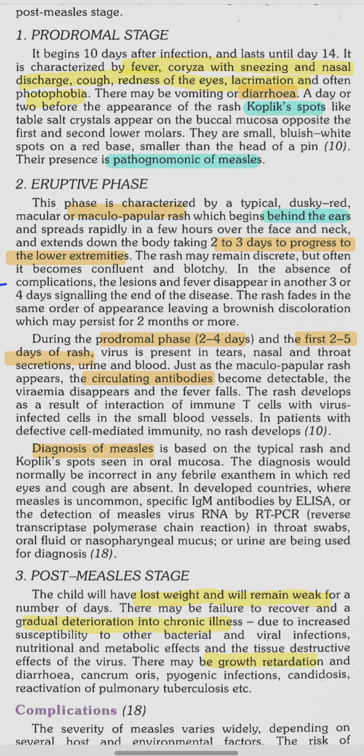In the prodromal stage, Koplik's spots are observed — small whitish spots seen on the buccal mucosa, opposite to the first and second lower molars. This is pathognomonic of measles.